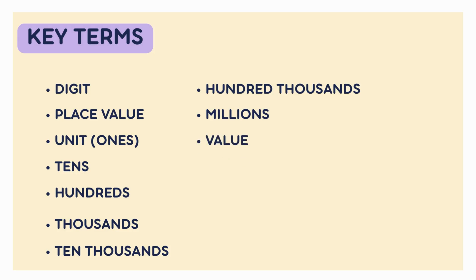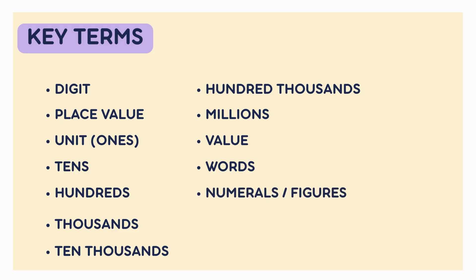Value: the actual worth of the digit based on its position. Words: writing a number in word form — for example, two hundred thirty. Numerals or figures: standard number form — for example, 675,320. Notation: the method or system of writing numbers. Feel free to pause the video and write these down in your notebook. These terms will come up again and again in this lesson and many others.